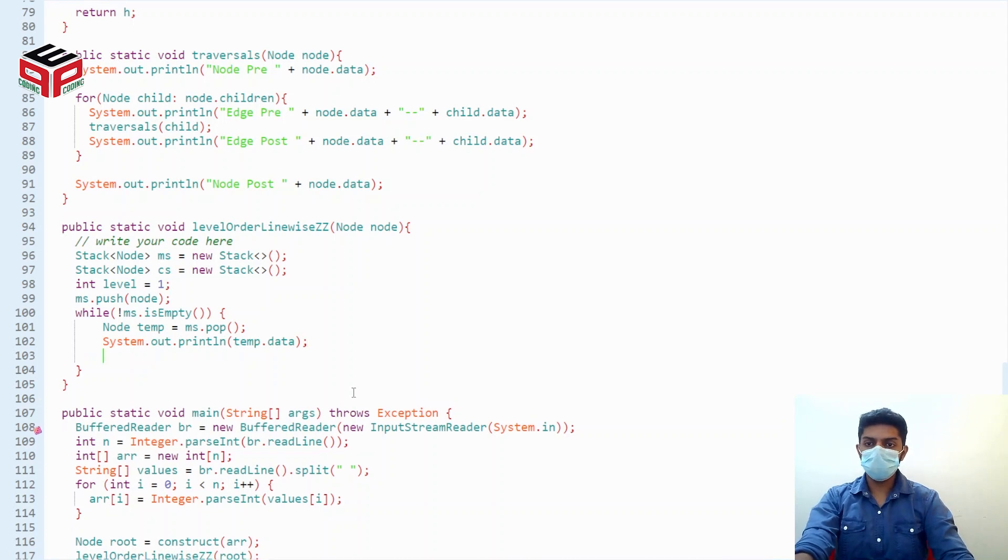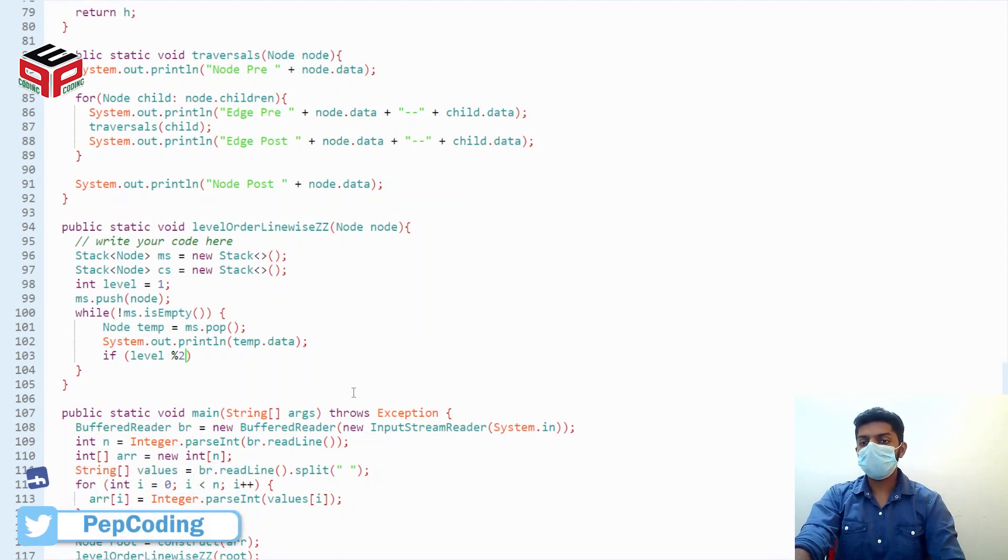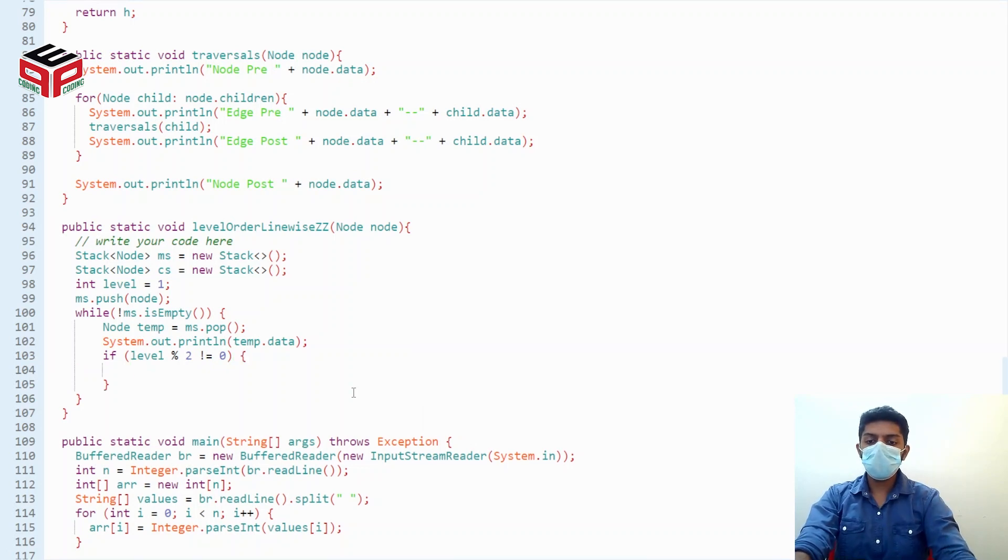Also we'll check that if level modulus two is equal to zero, or maybe not equal to zero, then we actually fill in the same sort of manner in which we were traversing. That is, we move a straight loop.